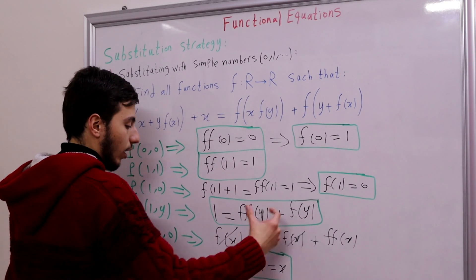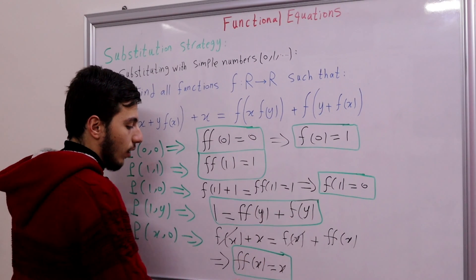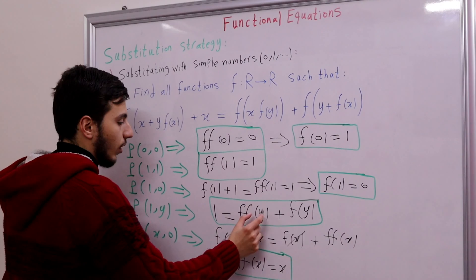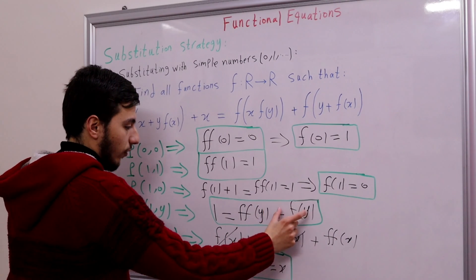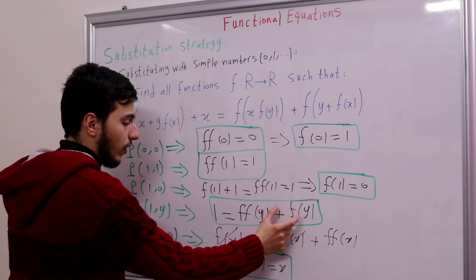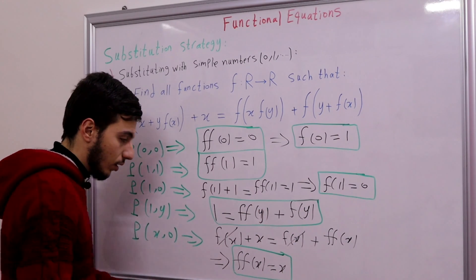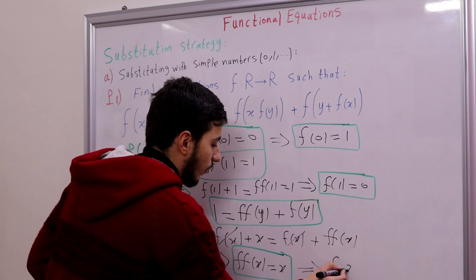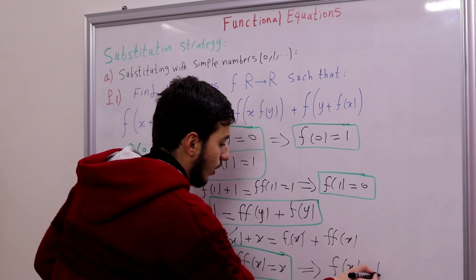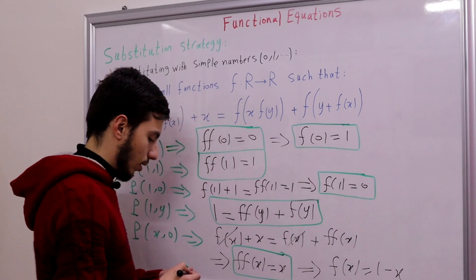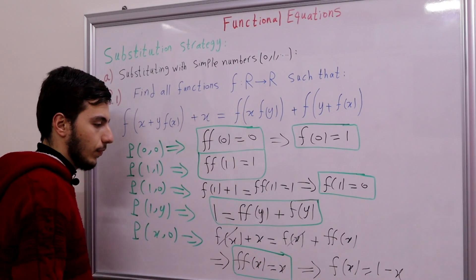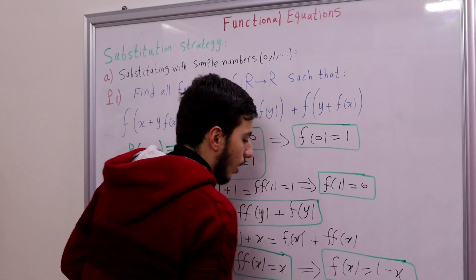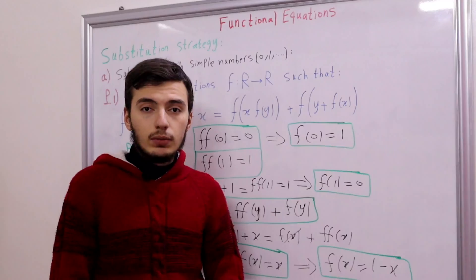Using f(f(x)) = x together with our earlier relation x + f(x) = 1, we conclude f(x) = 1 - x. So the solution is simply f(x) = 1 - x.